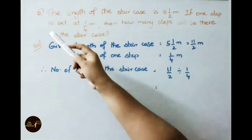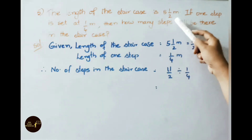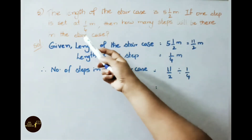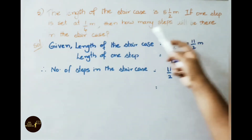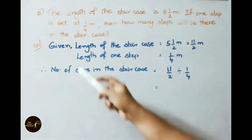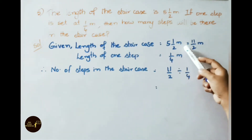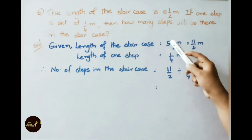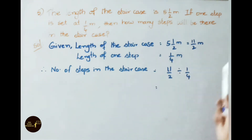See now question number 5. The length of the staircase is 5 and 1 by 2 meters. If one step is 1 by 4 meters, then how many steps will be there in the staircase? Let us see the solution now. Given: length of the staircase equals 5 and 1 by 2 meters, that equals 11 by 2 meters. Length of one step is 1 by 4 meters. We need to find the number of steps.